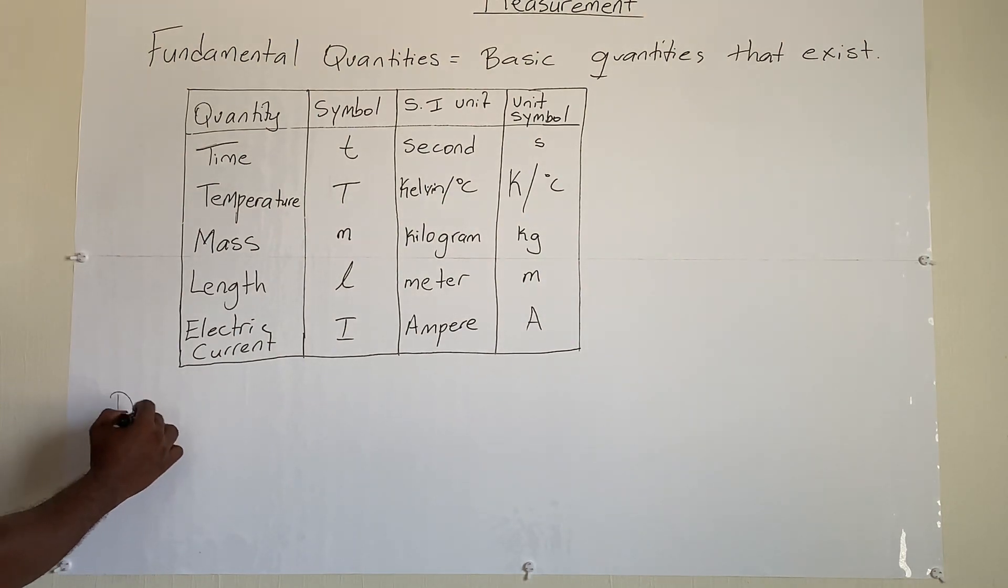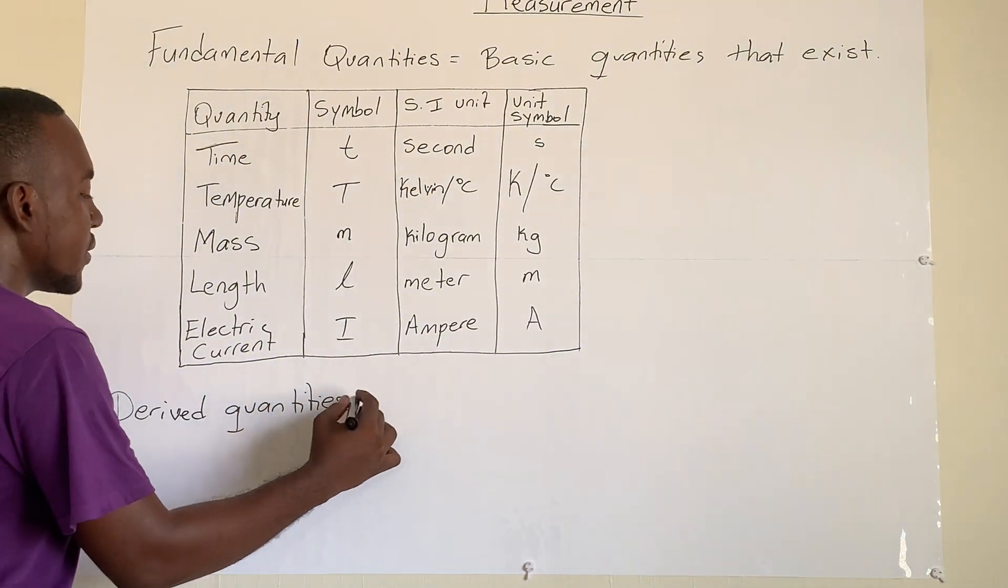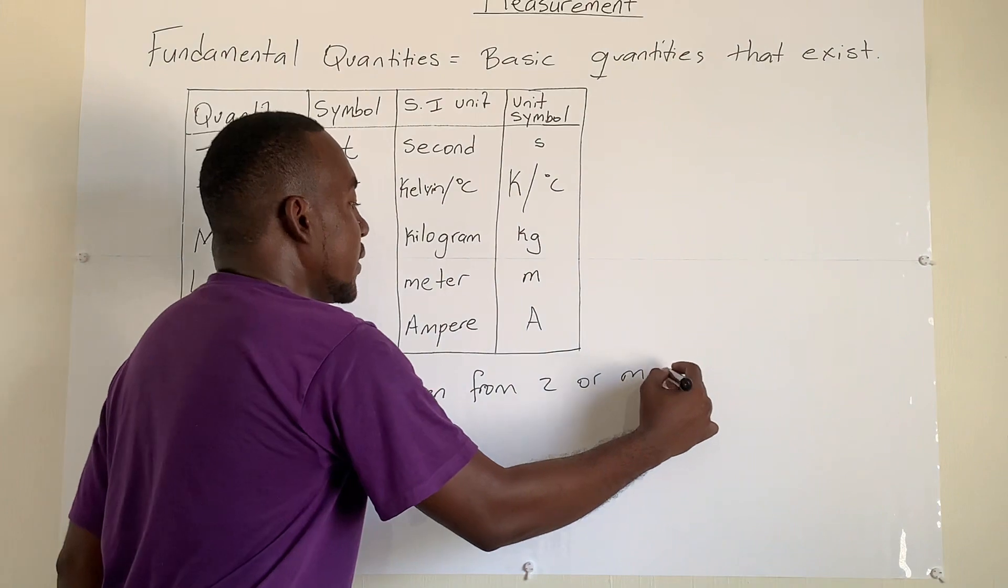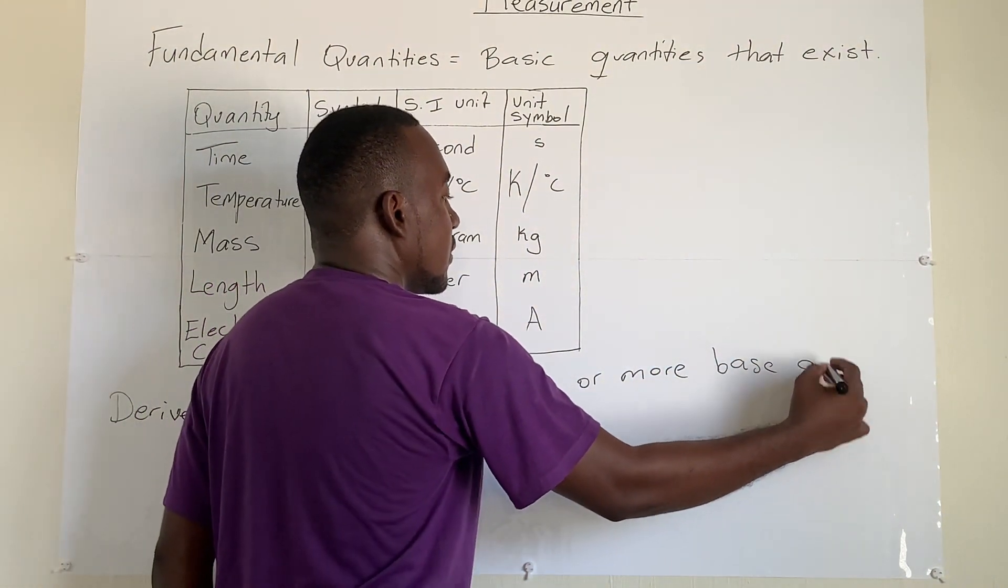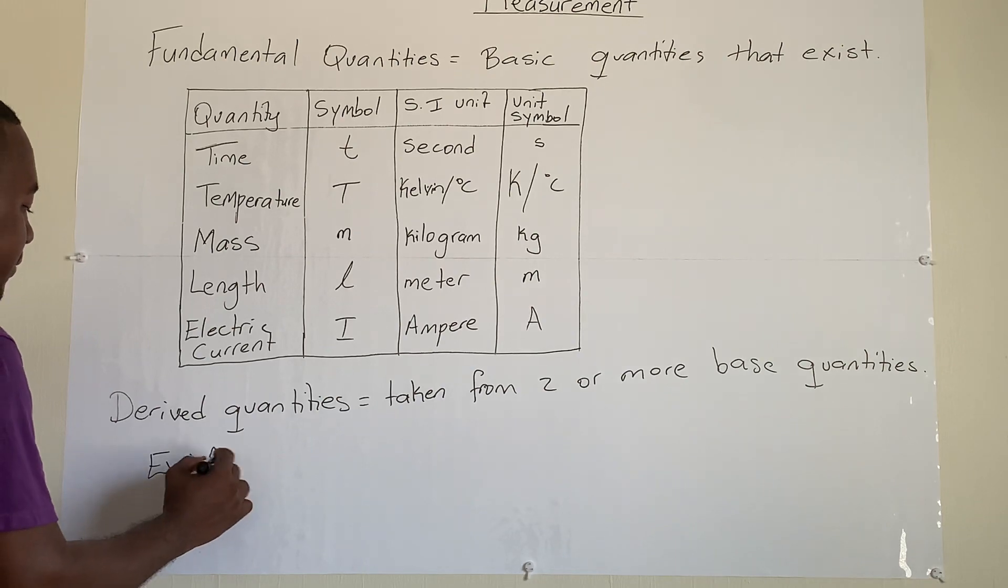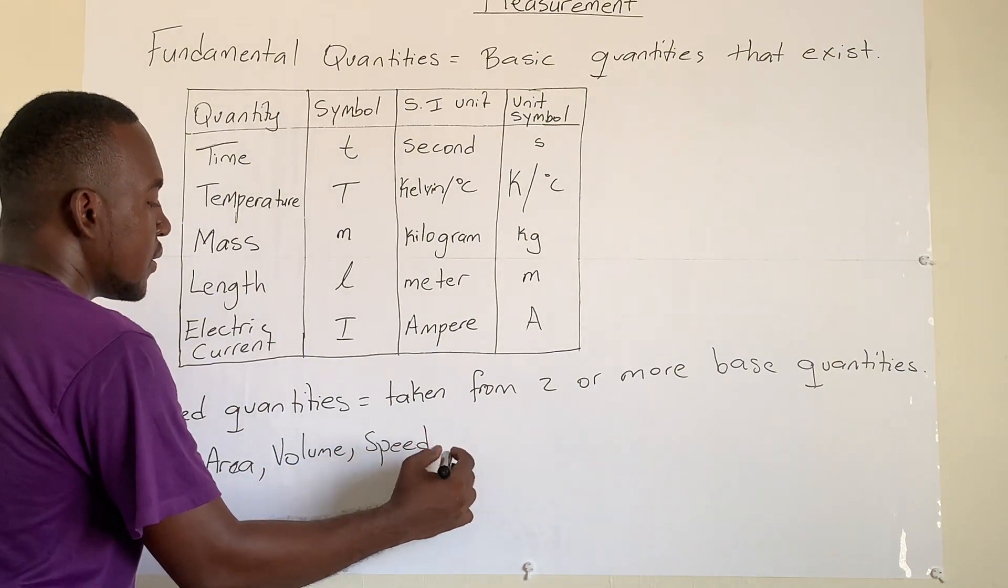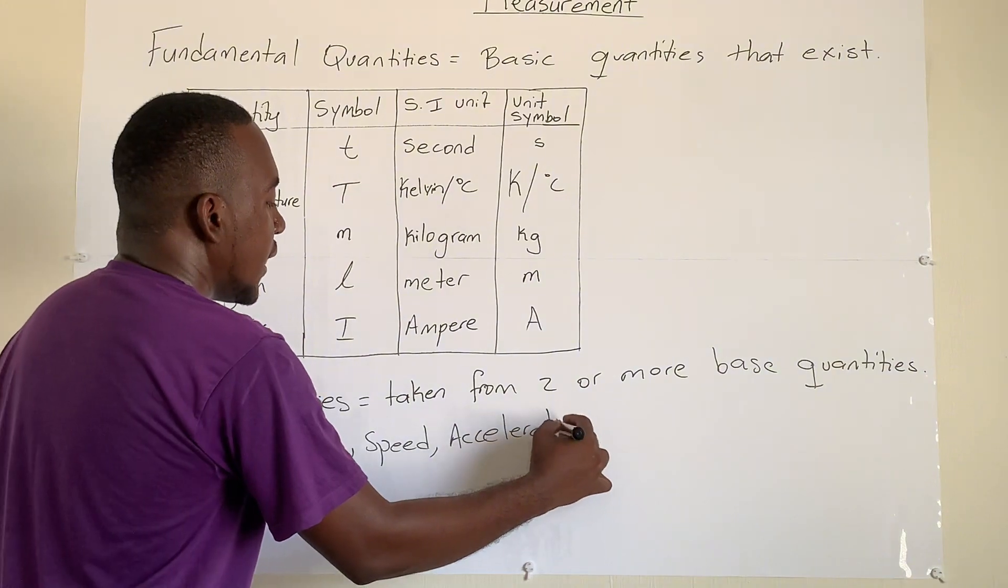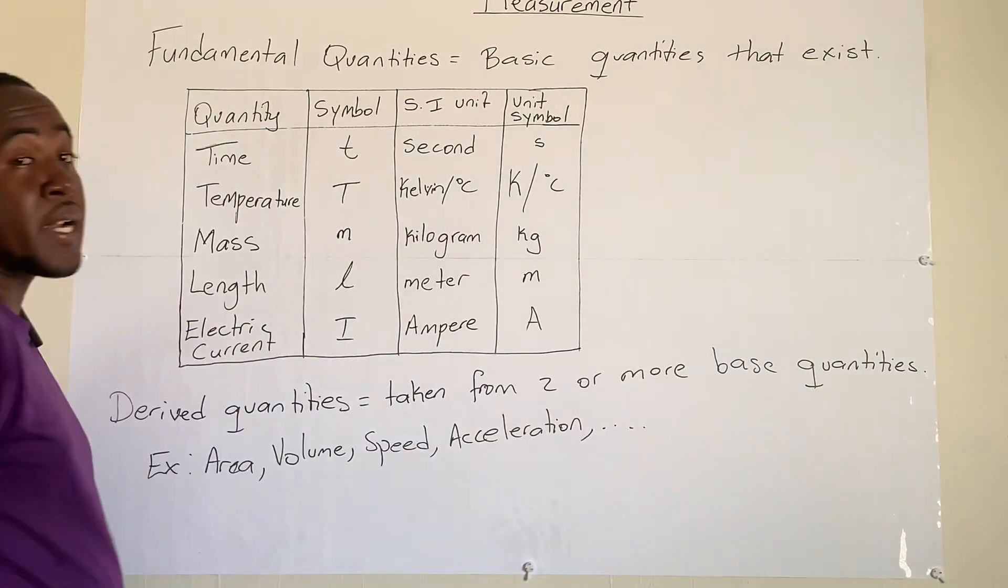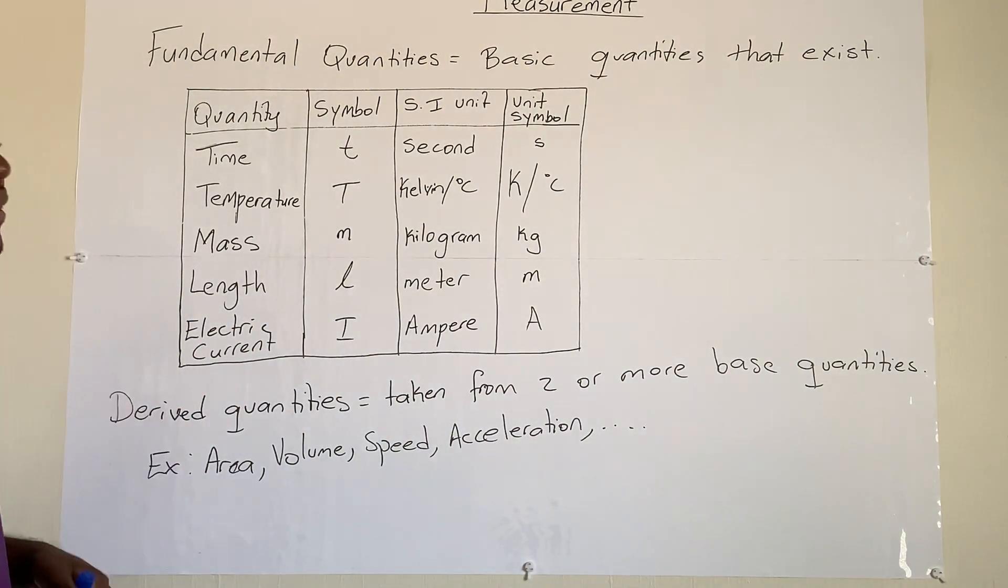The next type of quantities are called derived quantities. These are every other quantities that's not listed above. So they are taken from two or more base quantities. Examples: Area, Volume, Speed, Acceleration, and the list continues. So throughout our classes, we'll be focusing a lot on these derived quantities. And we'll have different sessions with most of them. So these are the quantities that exist in physics. So when we measure things, these are the things that we're measuring.